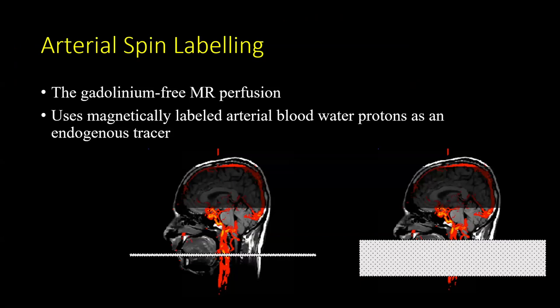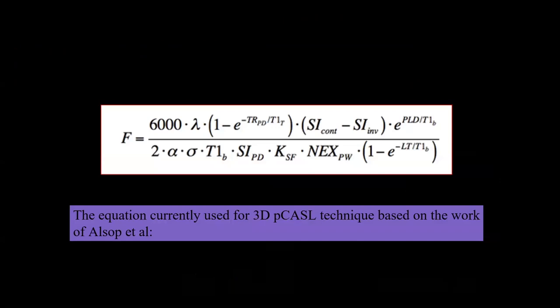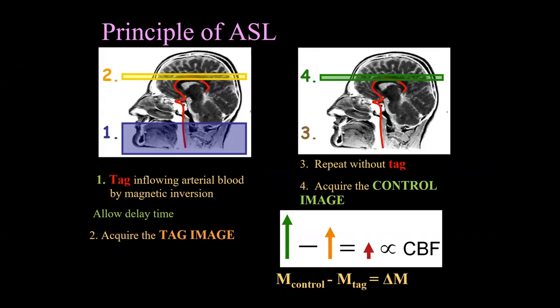Therefore, arterial spin labeling — the topic we are discussing today — becomes really important and of high utility. This is a novel gadolinium-free MR perfusion technique. It uses magnetically labeled arterial blood water protons as an endogenous tracer. In brief, we acquire two sets of images: labeled or tagged images, where we tag inflowing arterial blood using radiofrequency pulses by magnetic inversion, and control images acquired after a specific delay period without tagging. By subtracting the two sets of images, we acquire the ASL dataset.